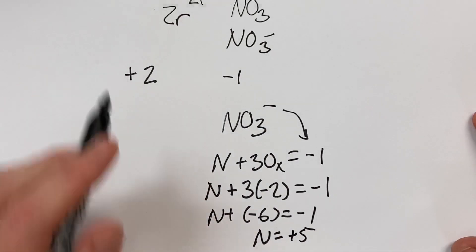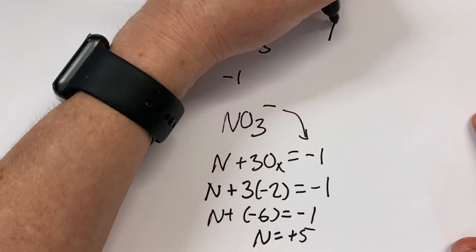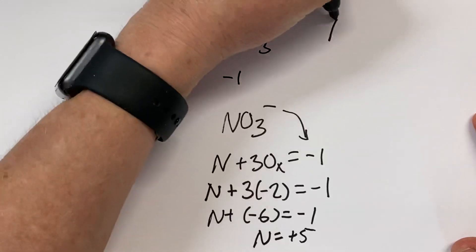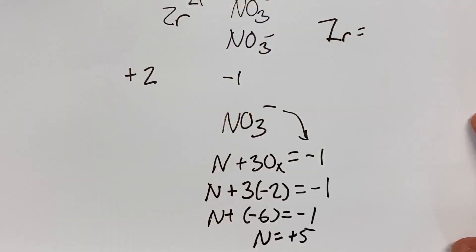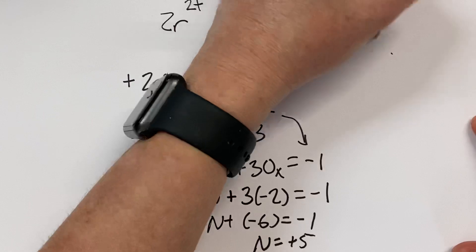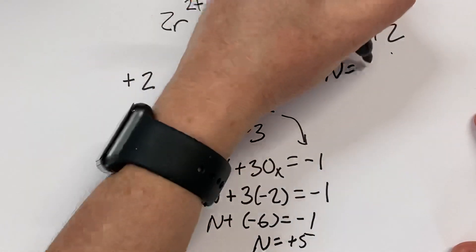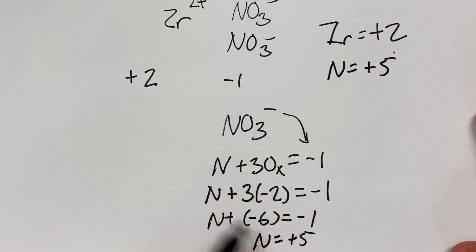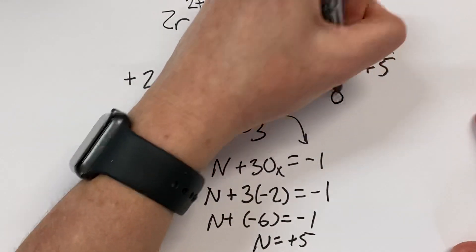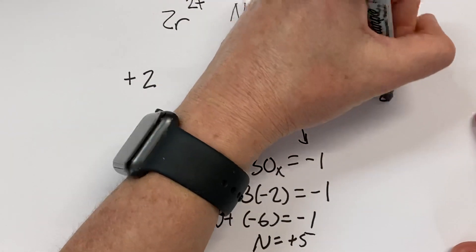In other words, the oxidation number of every single thing in here, the zirconium is plus 2 because that's its charge, the nitrogen is plus 5 because we figured it out from the nitrate, and the oxygen is negative 2.